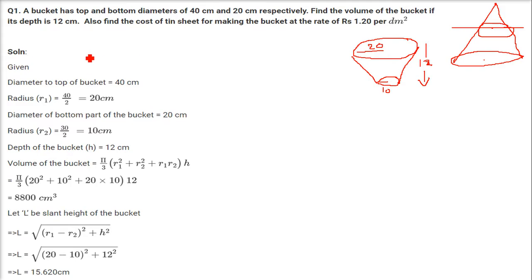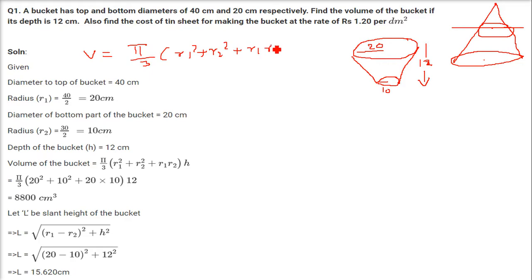We have the direct formula for volume of a frustum, or volume of the bucket: π/3 × (r1² + r2² + r1·r2) × h. Here r1 is 20, r2 is 10, and height is 12. Putting in the values, it comes out as 8800 cm³.